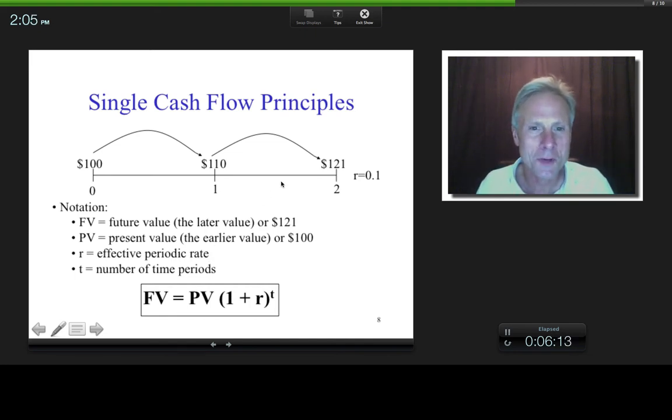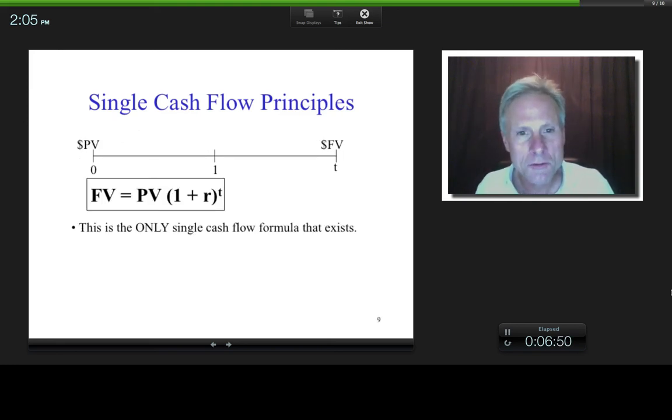So in all these time-valued money formulas, you have to be working with an effective rate. So if this is a six-month period, you better be working with an effective six-month rate. If this were a two-second period, you better be working with an effective two-second rate, which means the amount of interest made from $1 after two seconds. In any case, T, this final one, is the number of periods. So if we're taking this $100 and we're bringing it forward two periods, then this T better be two, right? So there is the only single cash flow formula that exists.